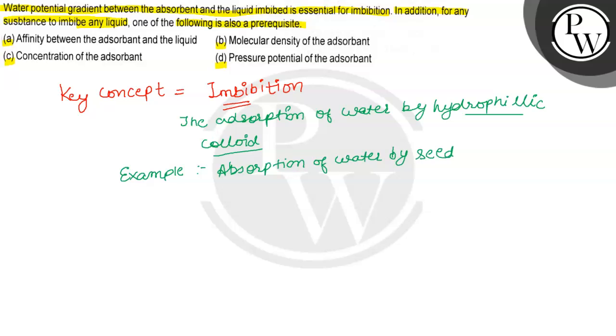Students, options के according देखें कि imbibition में क्या होता है। जो necessary conditions होती हैं for imbibition - पहला, water potential gradient होना चाहिए. Water potential gradient should exist between adsorbent and liquid.